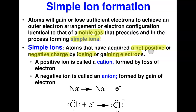When an atom becomes positively charged, it has lost an electron. When it becomes negatively charged, it has gained an electron. An atom that has lost an electron and becomes positively charged is called a cation, whereas one that has gained an electron and becomes negatively charged is called an anion.